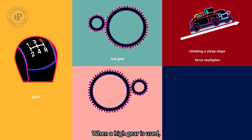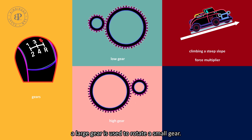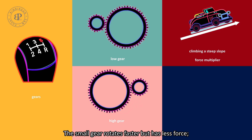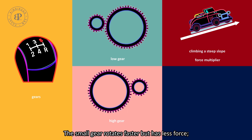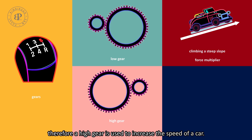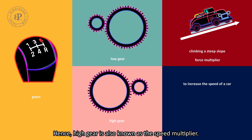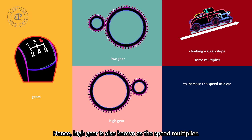When a high gear is used, a large gear is used to rotate a small gear. The small gear rotates faster but has less force. Therefore, a high gear is used to increase the speed of a car, and is also known as the speed multiplier.